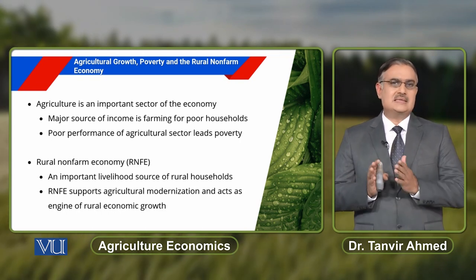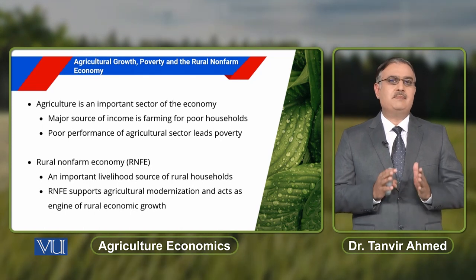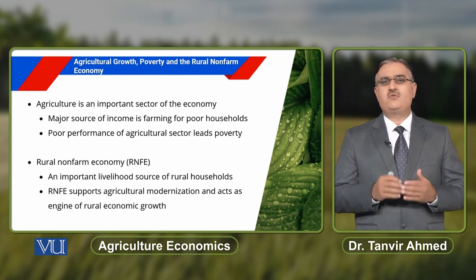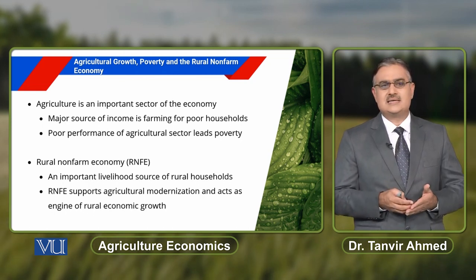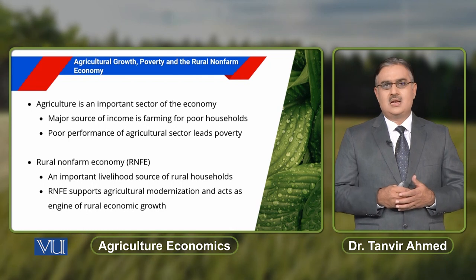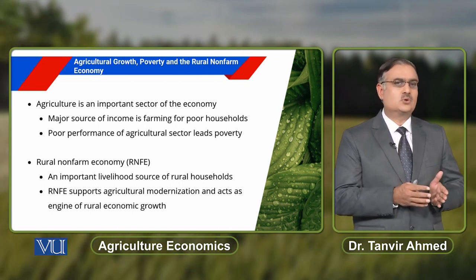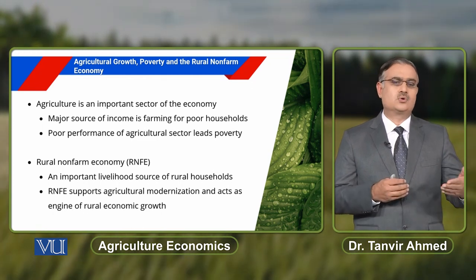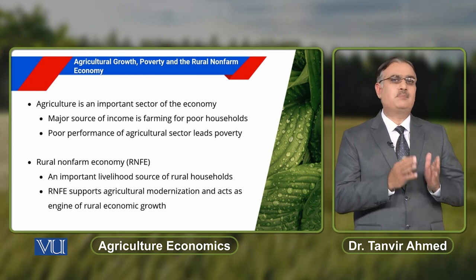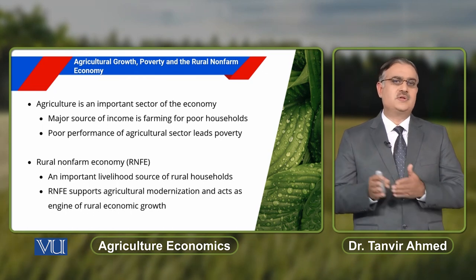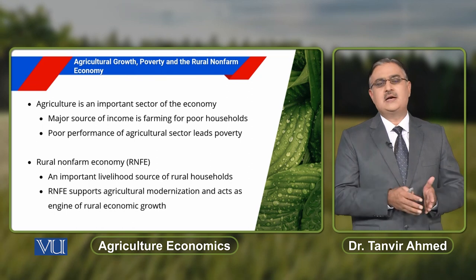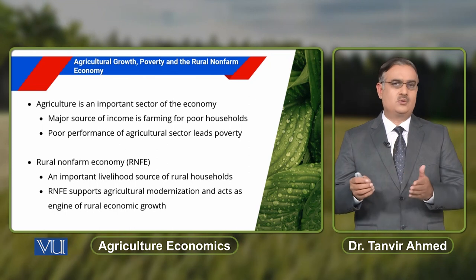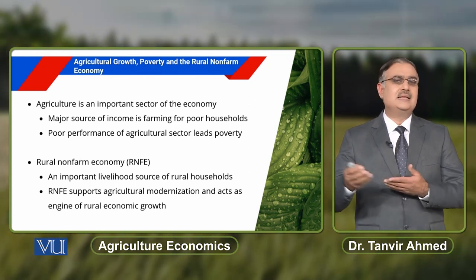Agriculture is an important sector of the economy and is the major source of income for poor households. Poor performance of the agricultural sector leads to poverty. Besides farming, there is another sector that operates in rural areas — the rural non-farm economy — which is an important livelihood source for rural households. In Pakistan, a significant portion of the population lives in rural areas where agriculture is the major occupation.